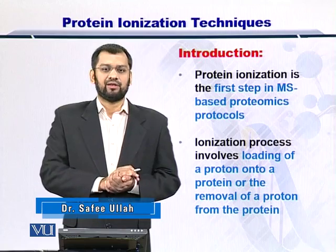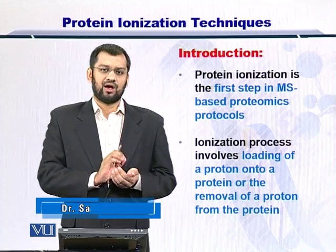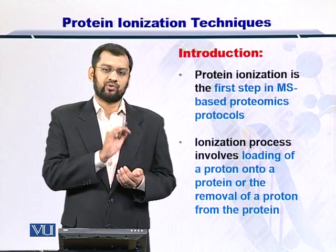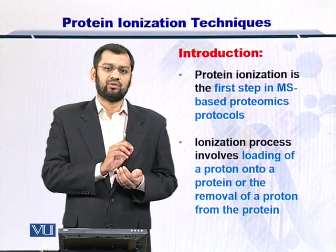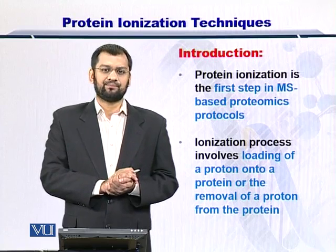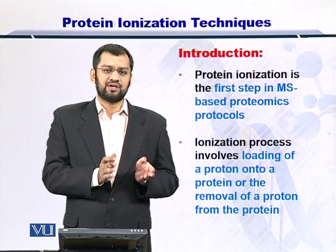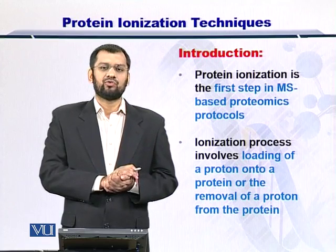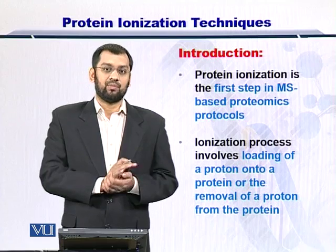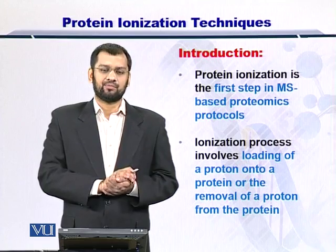Towards ionization of the protein, there are two ways. Either you insert a proton — you load a proton onto the protein or peptide — or you remove a proton from the protein or peptide. This will result in a net shift of the overall protein or peptide charge. If the overall charge of the molecule becomes plus 1 or minus 1, then it can be deflected by the magnetic field in the mass spectrometer.